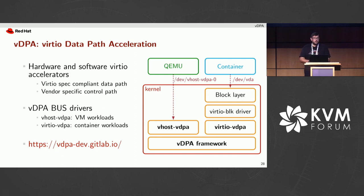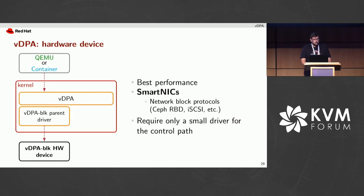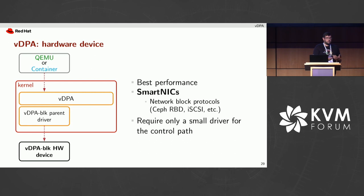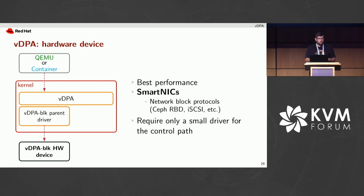In the case of a VDPA block device using virtio-vdpa, a virtio-blk driver is loaded inside the host kernel to handle the data path and connect the VDPA device with the Linux block layer, so applications running in the host or containers can access the VDPA device through the block device exposed by the Linux kernel, for example under /dev/vdpa. You can find more information at vdpa-dev.gitlab.io. VDPA was designed for hardware accelerators, where the virtqueues are processed directly by hardware, providing the best possible performance — for example smart NICs that emulate a virtio block device to accelerate network block protocols such as NVMe-oF, iSCSI, or others.